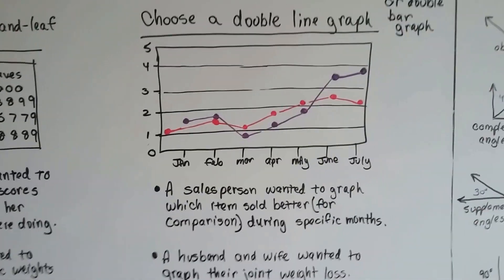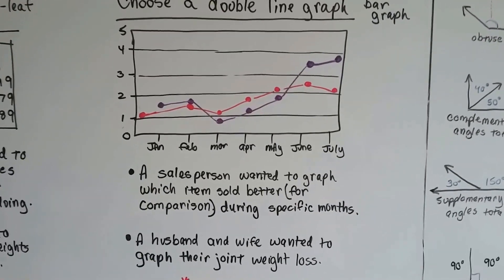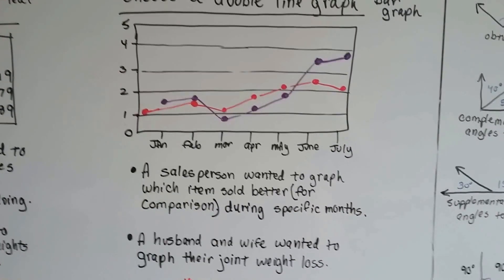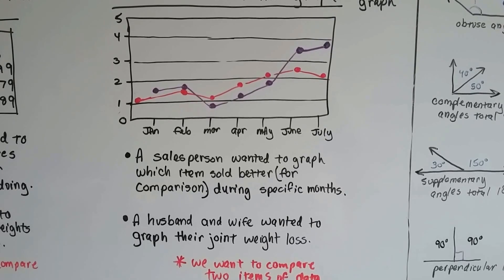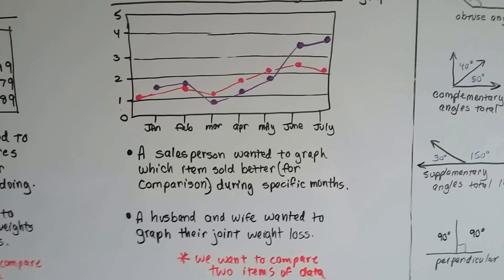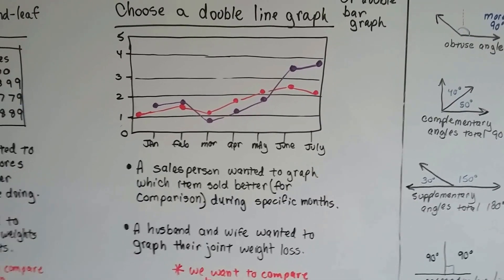You could choose a double line graph or a double bar graph. A salesperson wanted to graph which items sold better for specific months to compare them. Or a husband and wife wanted to graph their joint weight loss to compare it to each other. When we want to compare two items of data, a double line graph or a double bar graph is good.